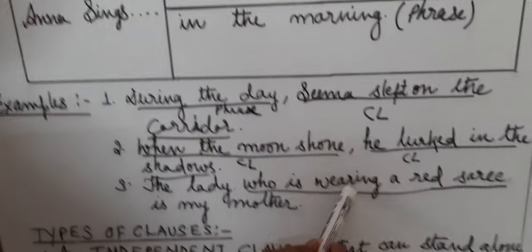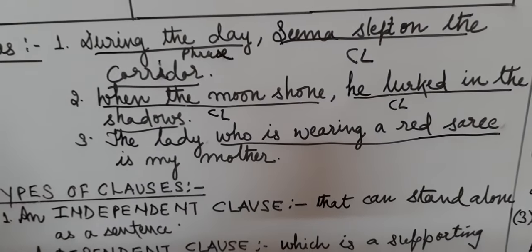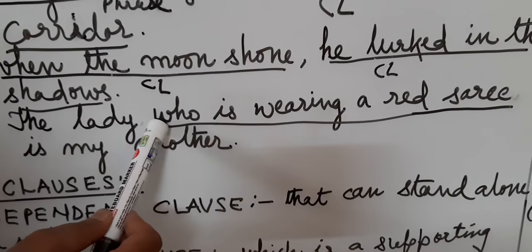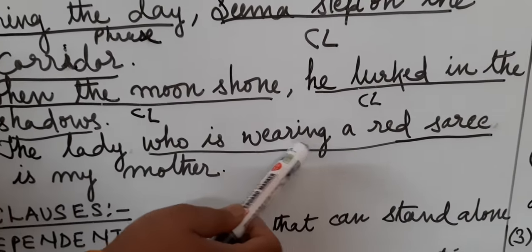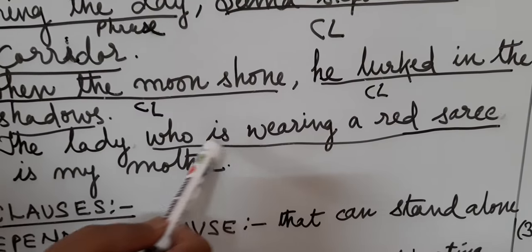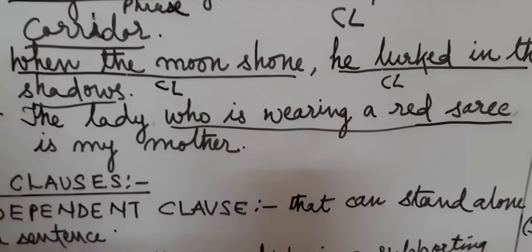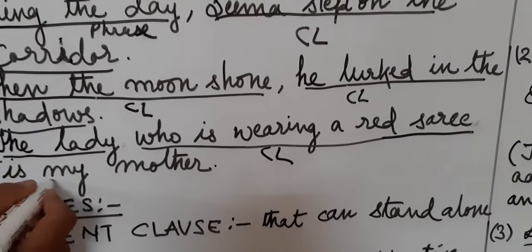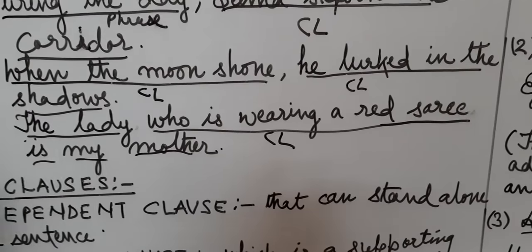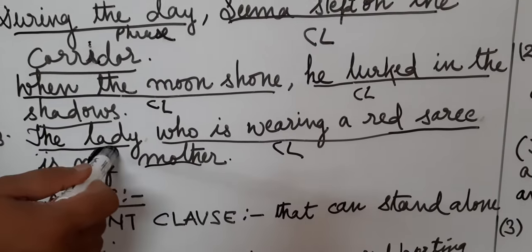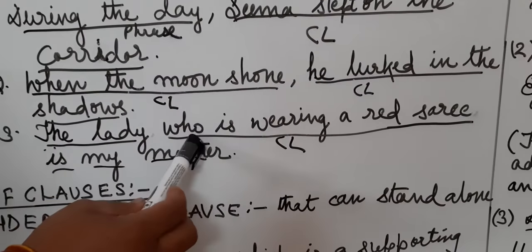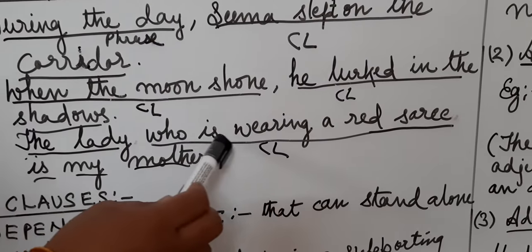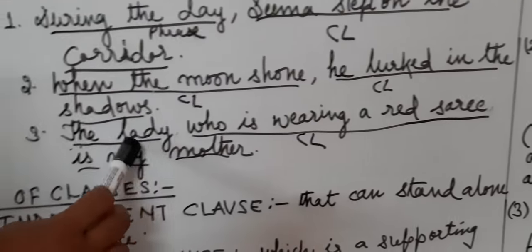Next sentence: 'The lady who is wearing a red sari is my mother.' See this part — 'who is wearing a red sari.' Here 'who' is acting as subject and 'wearing' is a verb. Subject bhi hai, verb bhi hai, so this is a clause. And 'the lady is my mother' — the lady is subject, 'is' is verb — this is also a clause. 'Who is wearing a red sari' is a dependent clause — jo laal sari pehni hai — meaning adhura hai. 'The lady is my mother' is the independent clause.